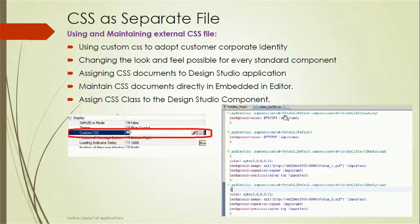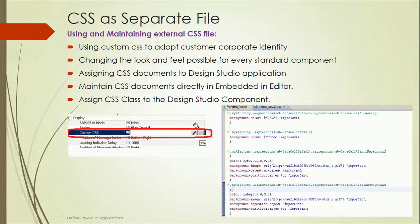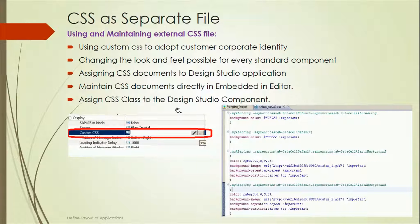We can also embed external CSS. Suppose we have a common CSS file developed for all applications and we want to use it for all of them — we can go to Custom CSS, browse for the .css file, select it, and embed it. Once embedded, we can edit it separately here as well. This is how we assign a CSS document to a Design Studio application, or assign it to a component or chart.